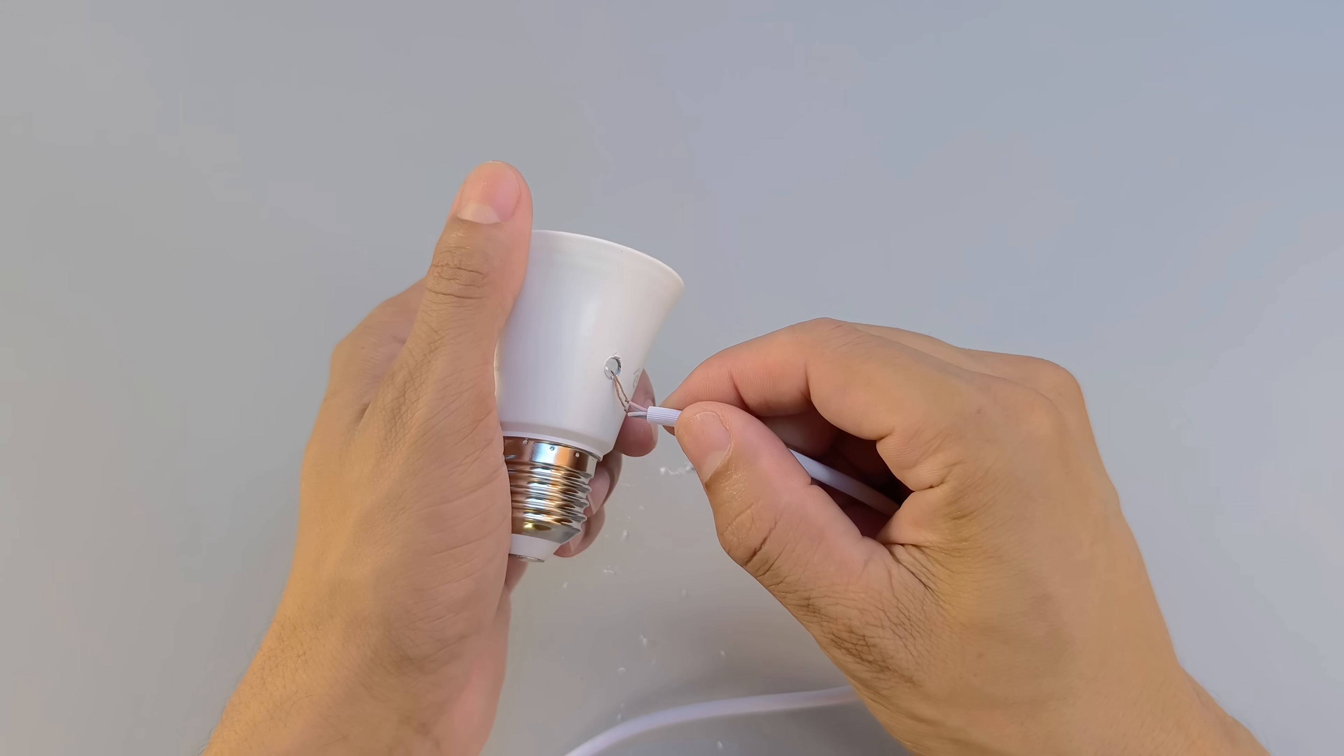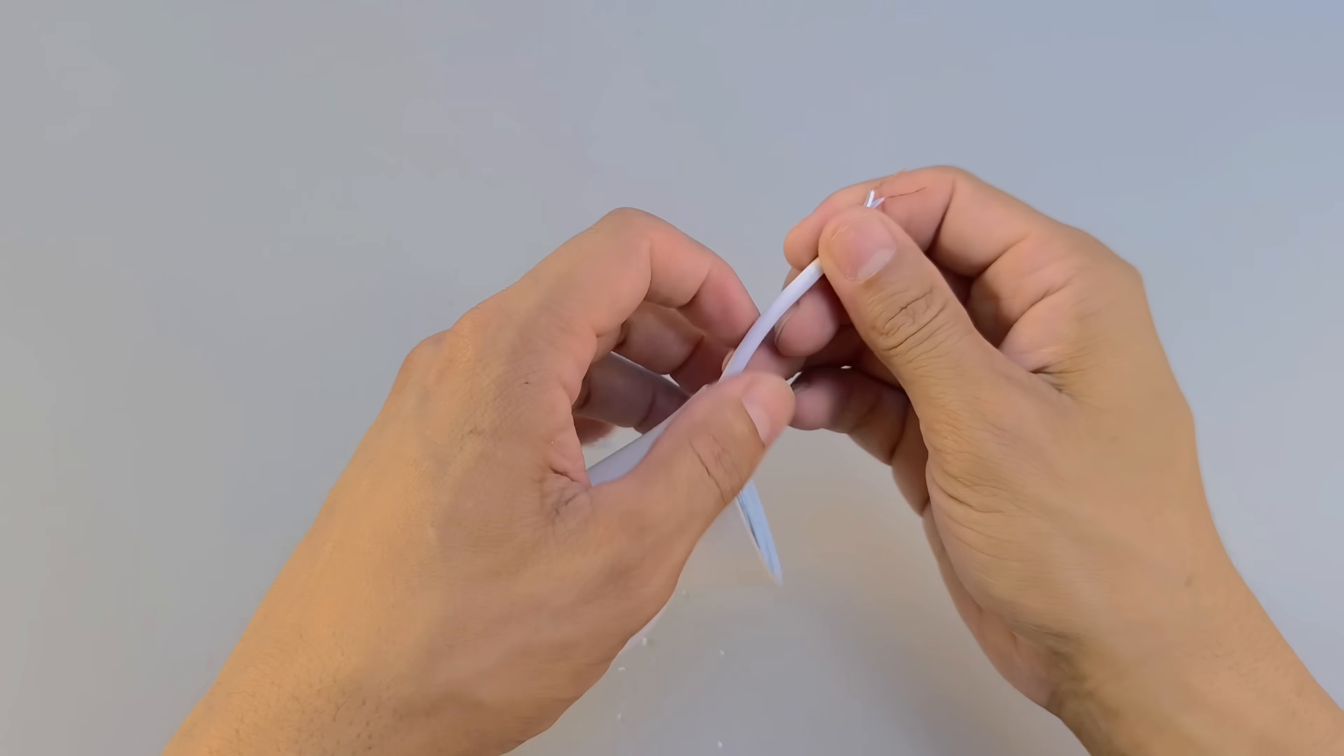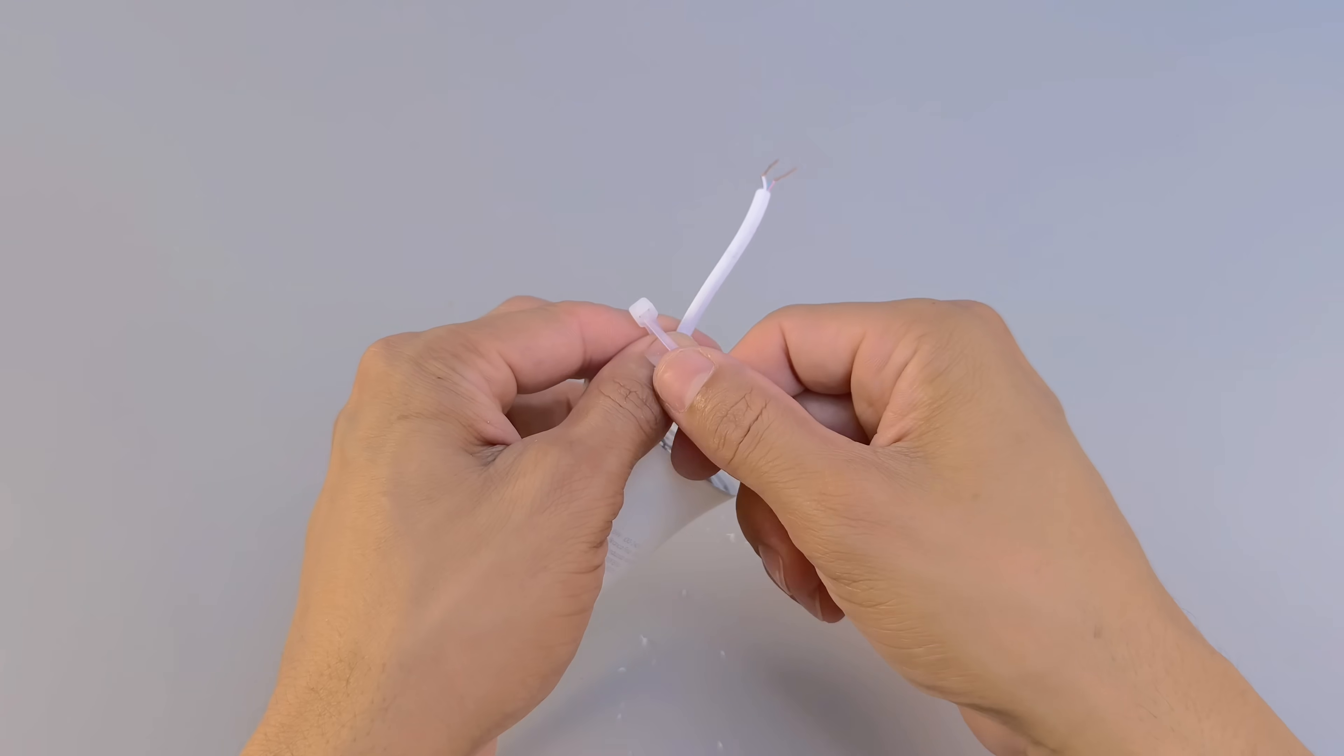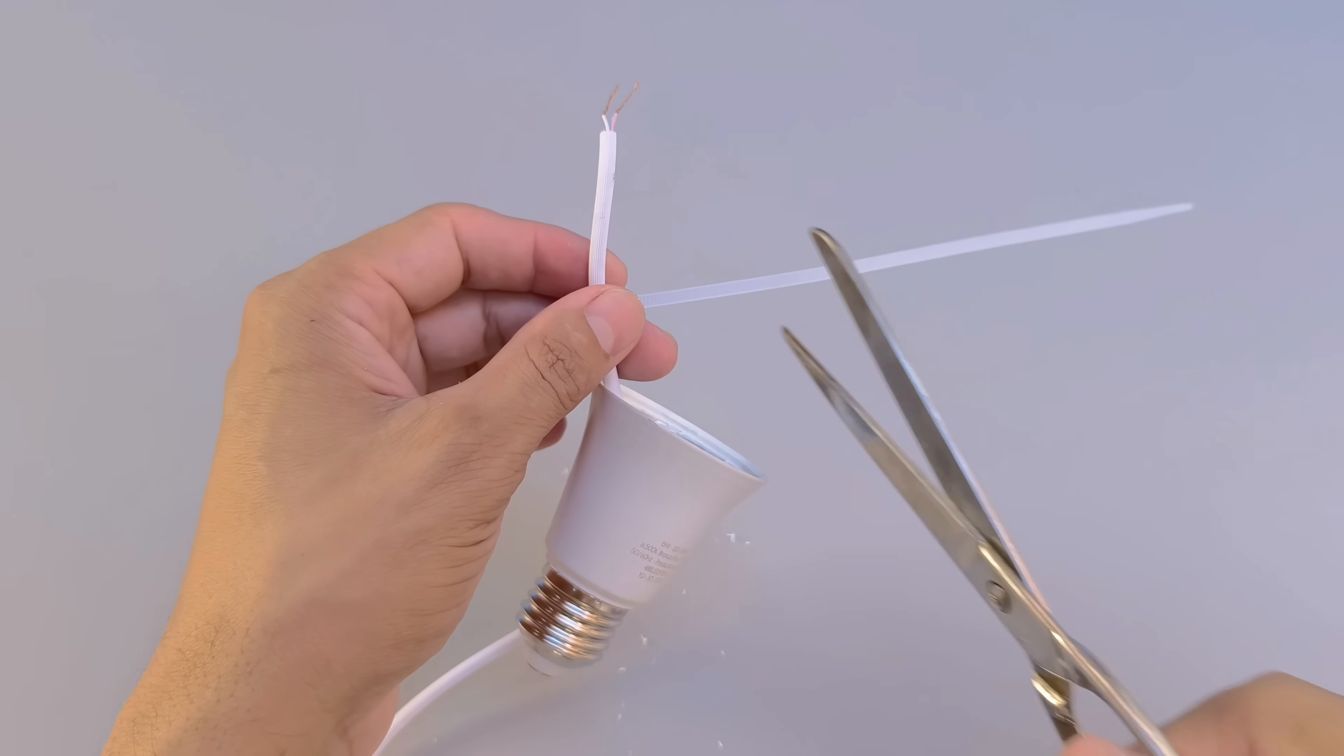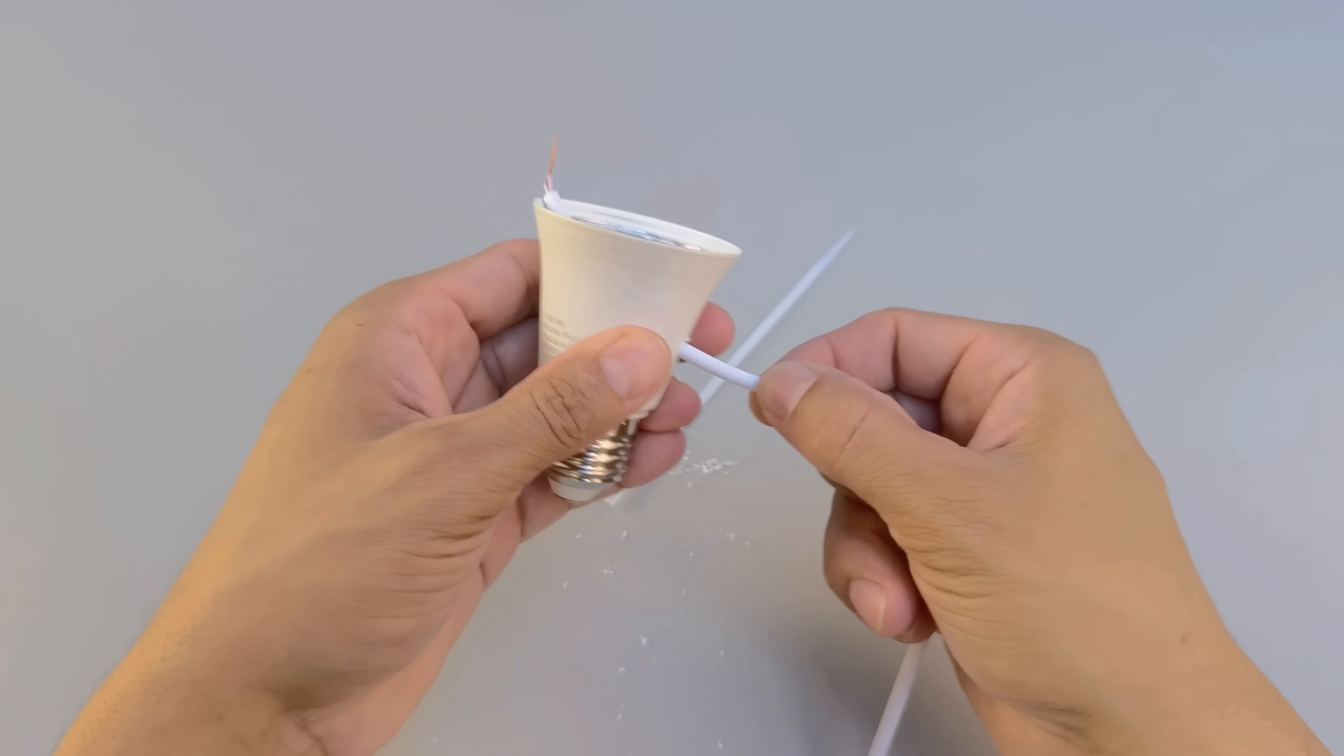Feed the USB cable through the hole, leaving the ends of the wires exposed on the inside of the lamp base. To ensure that the cable does not slip out or break easily, secure it with a nylon cable tie. Simply fit the cable tie around the cable near where it exits the hole and tighten until it is secure. If necessary, trim off the excess cable tie for a clean, secure finish.